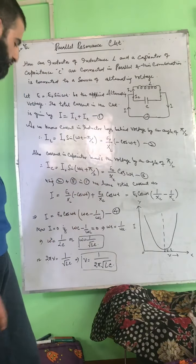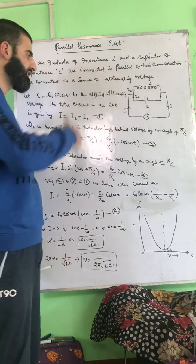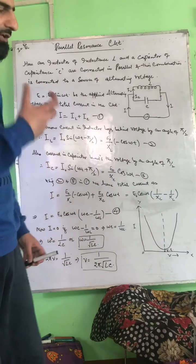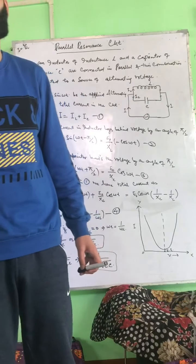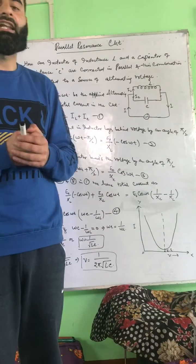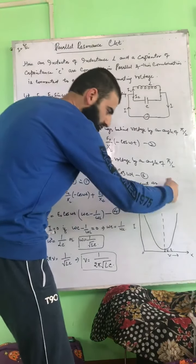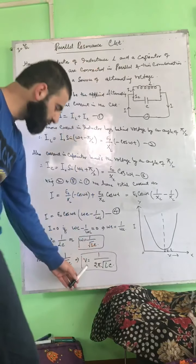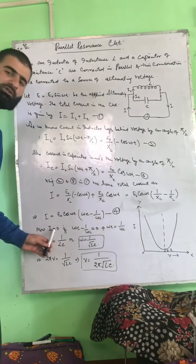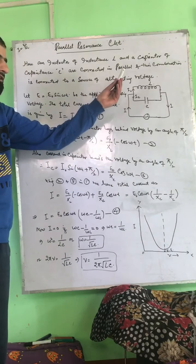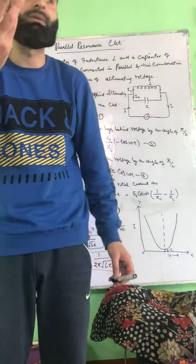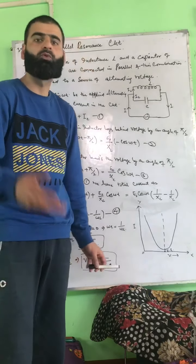So resonance occurs when the frequency of the AC source equals the resonant frequency of the circuit. Now notice the key difference from the series resonant circuit: in the series LCR circuit at resonance, the current was maximum and impedance was minimum. But here in the parallel resonant circuit, at resonance the current is zero and the impedance is maximum — it is totally the opposite.